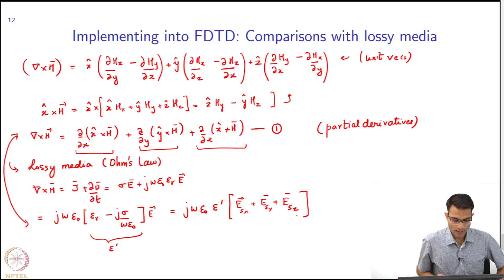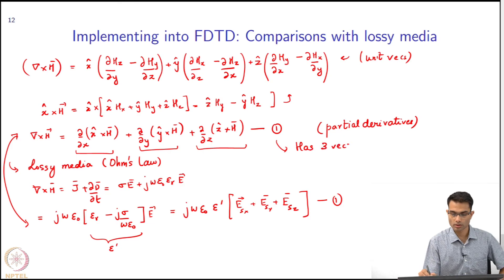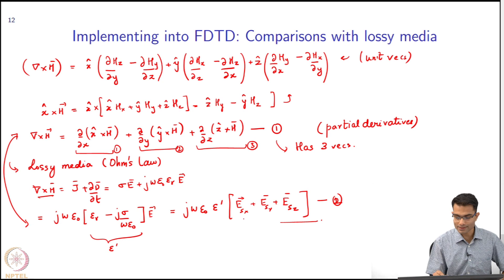What am I saying? I am saying that equation 1 has three vectors - each of these terms is one vector. And curl of H, finally by Maxwell's equations, is going to be equal to this term. The electric field also has three vectors, so I am defining these three vectors.